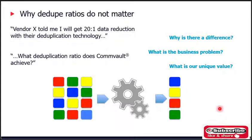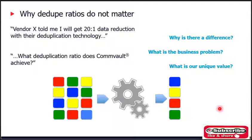Now I will cover the common Commvault deduplication architecture, but first let's address some advice about dedupe ratios. It's an age-old argument you will almost certainly encounter in your sales campaigns. The question is: why does a high dedupe ratio not matter? To achieve a high dedupe ratio, you simply run a higher number of full backups. A high dedupe ratio actually means you are reading, transferring, and processing large quantities of data only to have all that thrown away.